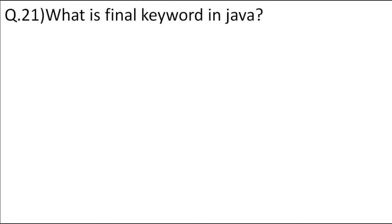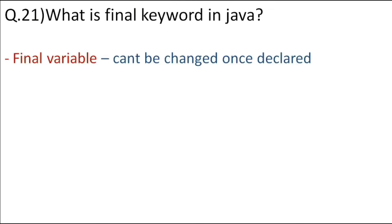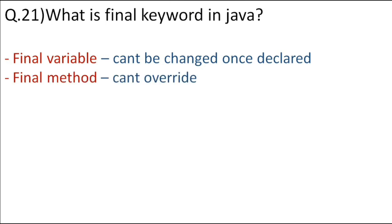What is the final keyword and where is it used? Final is used with variables, methods, or classes. A final variable means you cannot change its value once assigned — for example, speed = 100 cannot be changed. A final method means you cannot override it — no one can change its implementation. A final class means you cannot extend it. So final is used to restrict variables, methods, or classes from being changed.